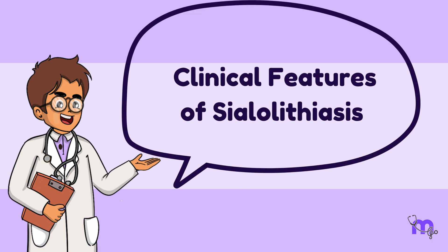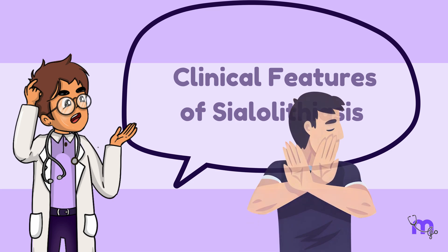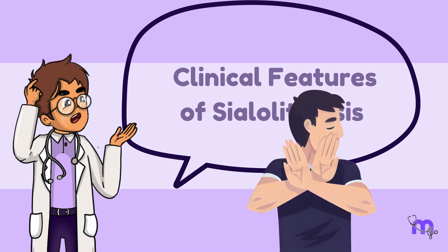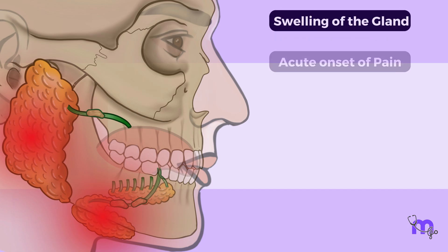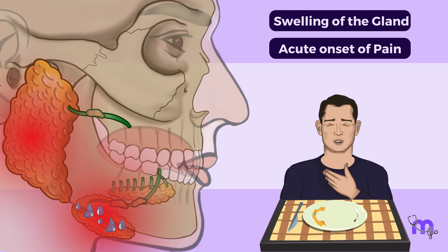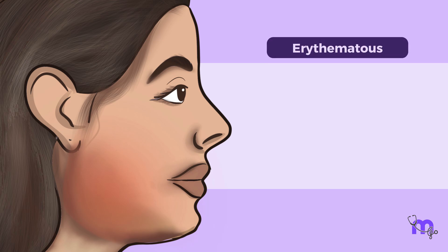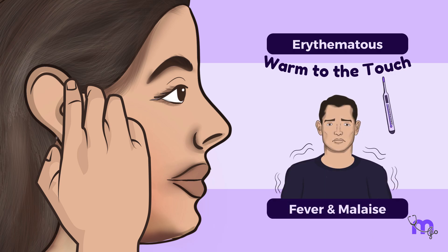Let us now discuss the clinical features of sialolithiasis. Sialolithiasis can be tricky to diagnose clinically because some people with stones don't experience any symptoms. Symptoms only appear if the stone blocks the salivary duct. These include swelling of the gland and acute onset of pain that worsens with meals. If blocked saliva leads to infection, the skin over the swollen gland may become erythematous and warm to the touch.